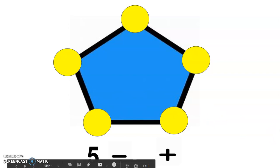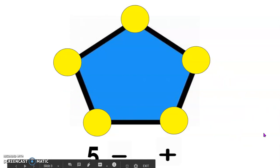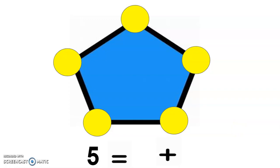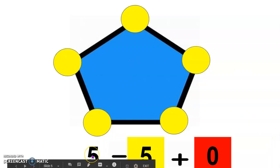Let's write a number sentence about this shape and the dots you see on the pentagon. Now how many dots do you see on the pentagon? Yes, 5. So there are 5 yellow dots on the pentagon. How many red dots do you see? I see 0 red dots on my pentagon. 5 dots is equal to 5 yellow dots plus 0 red dots. Let's try another one.